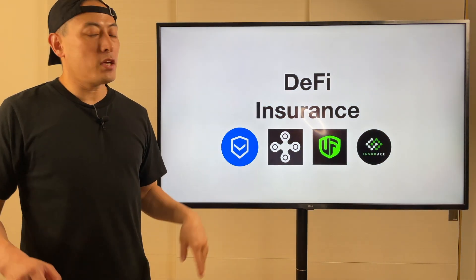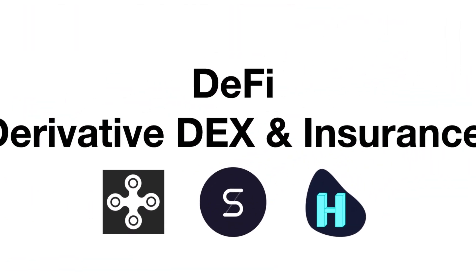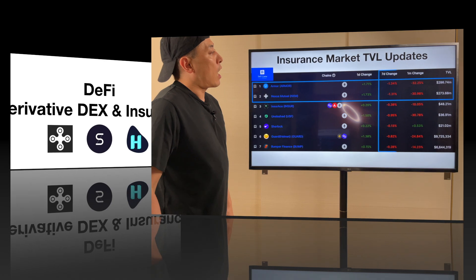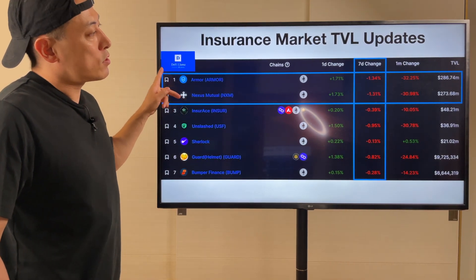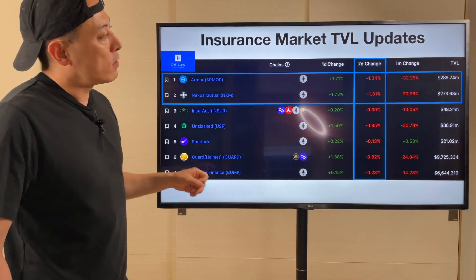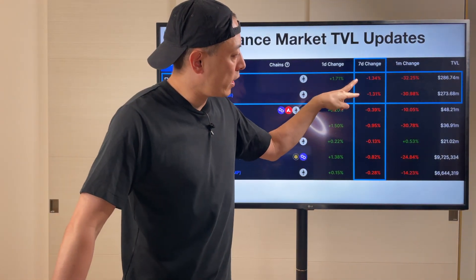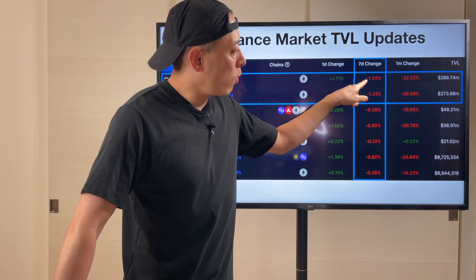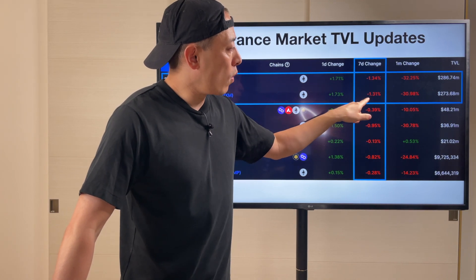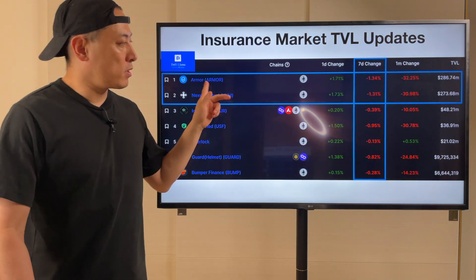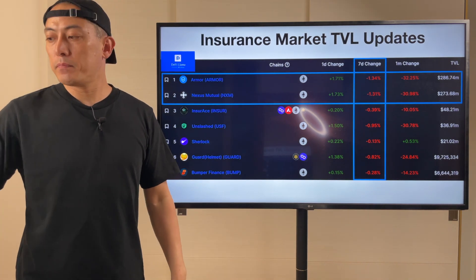DeFi insurance — Armor and Nexus Mutual, both key players. Their stats are decreasing, also getting smaller: 1.34 and 1.31. It's a pretty good signal for the end of the bearish cycle.